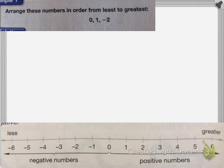So I need to arrange these numbers in order from least to greatest. And when I do that, I'm going to think about my number line and where these numbers are on it. So I have 0, 1, and -2. So the least number, the smallest number, is -2, because negative is always going to be smaller than a positive number. So my smallest number is -2.